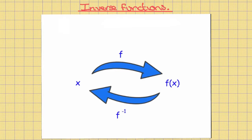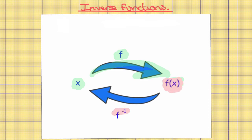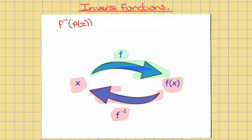Inverse functions: an inverse function reverses or undoes what is done by a function. For instance, we take variable x, input it into our function f, and what we get out is f of x. If we want to reverse that, we take f of x and put it into our inverse function f to the minus one, and what comes out is x, our original input. Algebraically, we can write: f to the minus one of f of x equals f of f to the minus one of x, which equals x.